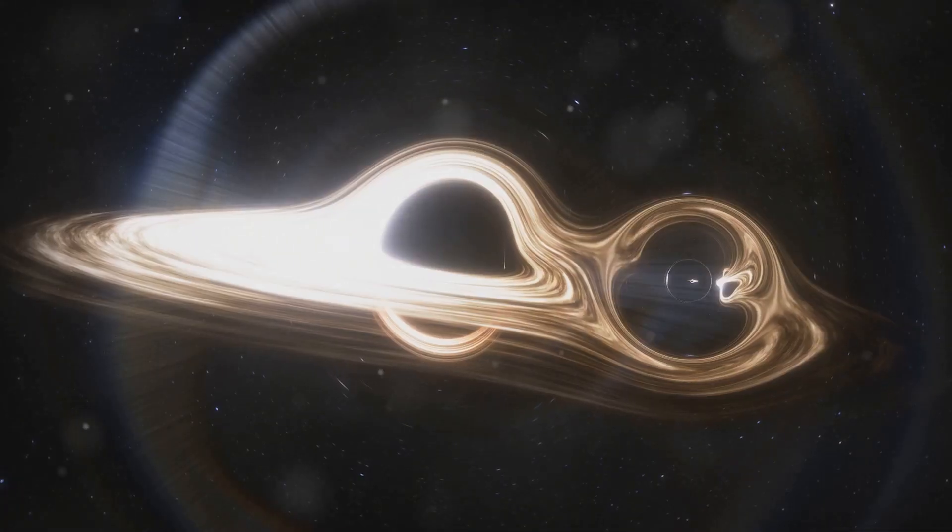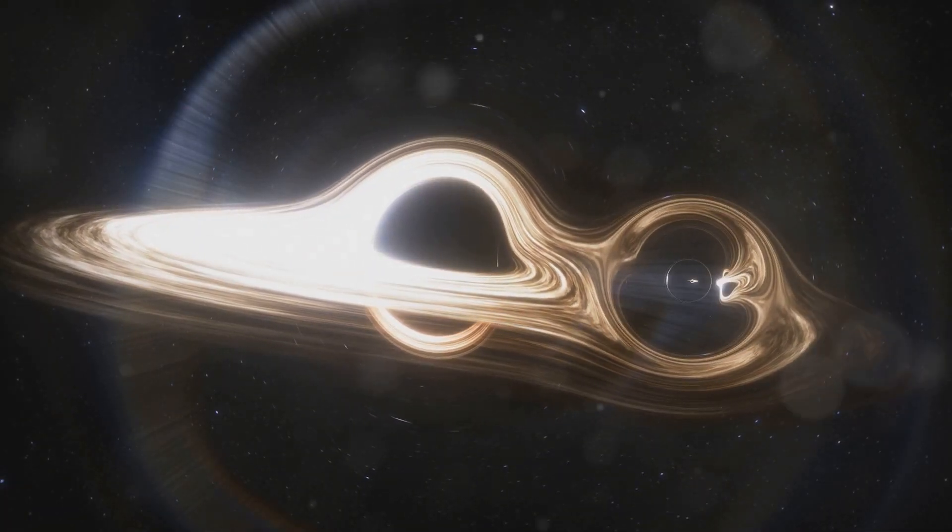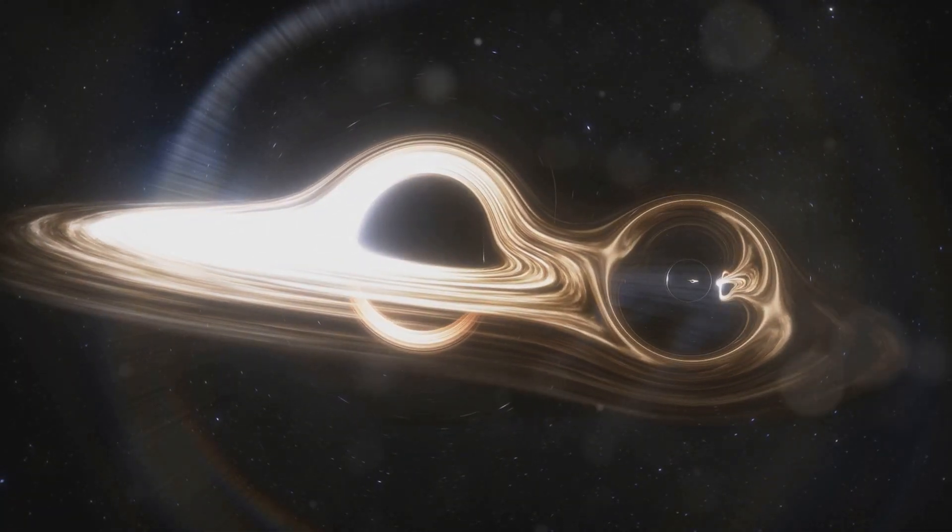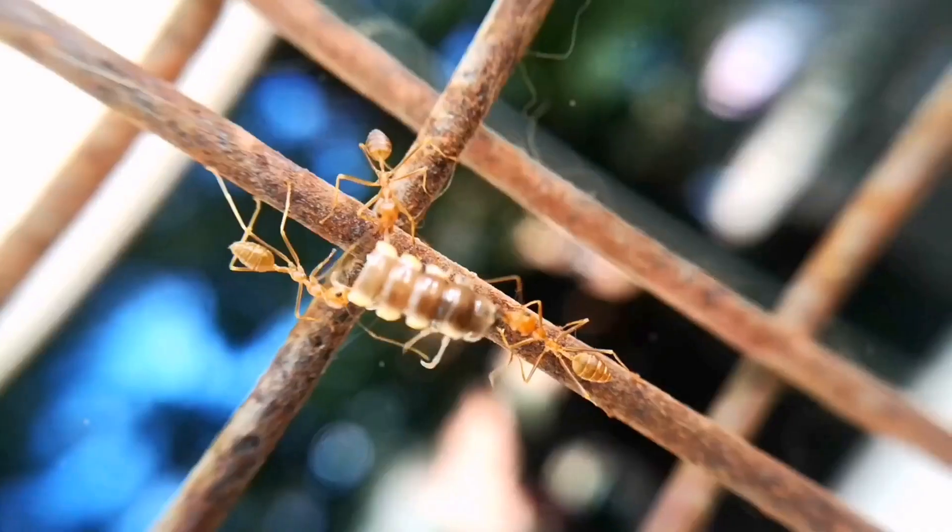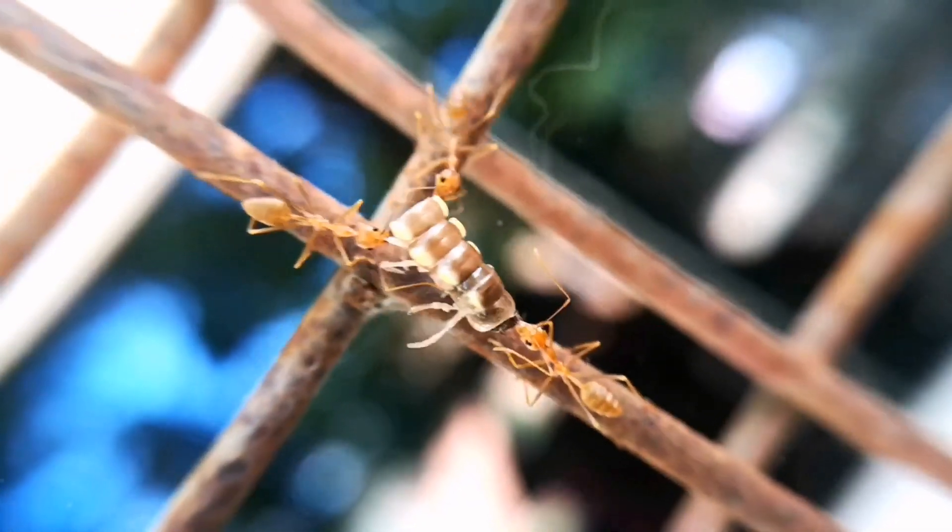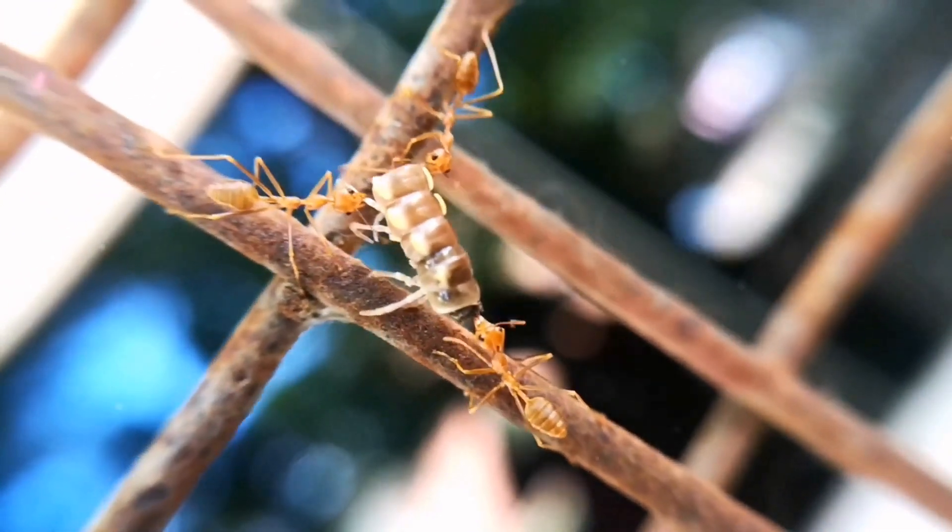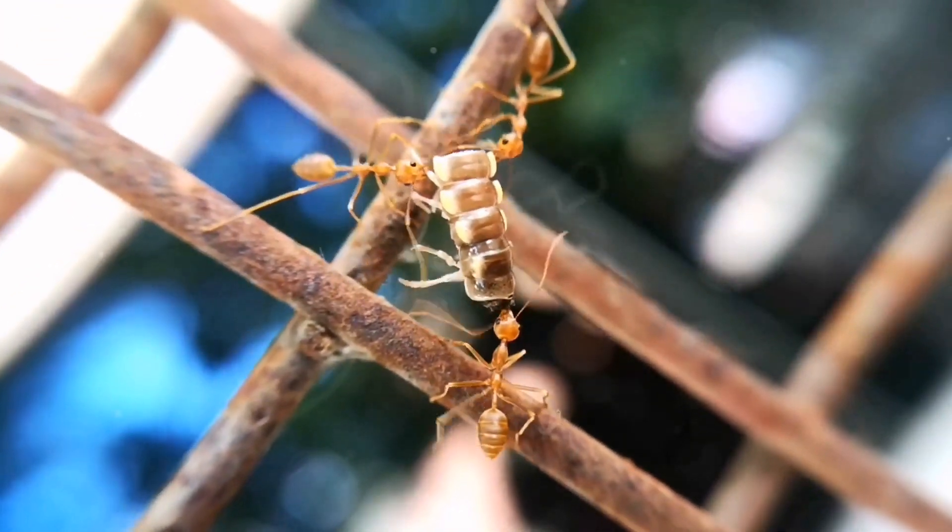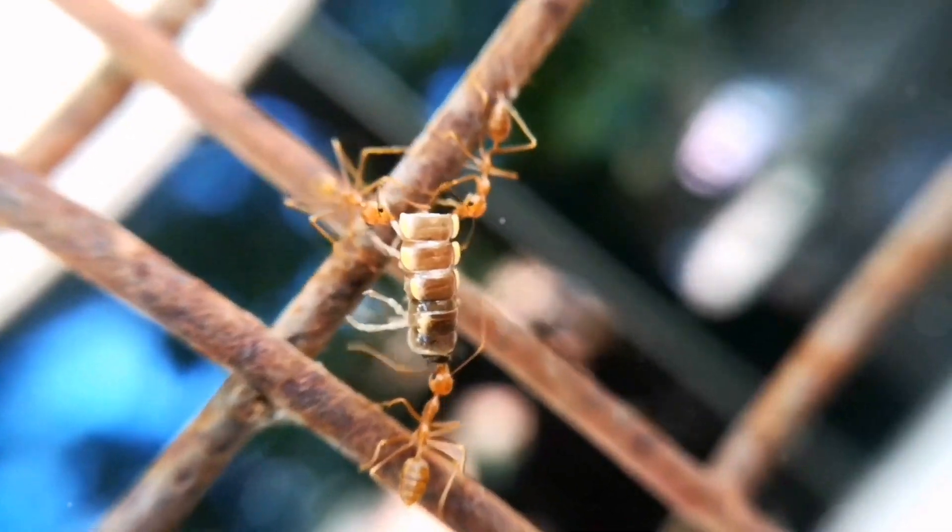However, an ant crawling on the rope would experience an additional dimension: the dimension of the rope's circumference. Similarly, string theory suggests that our universe may have extra spatial dimensions curled up at distances too small for us to perceive directly. Just as the ant can move around the circumference of the rope without the tightrope walker noticing, particles in string theory can vibrate in these extra dimensions.